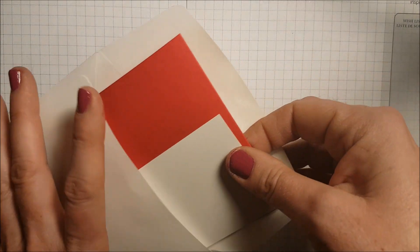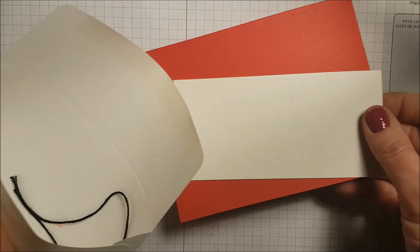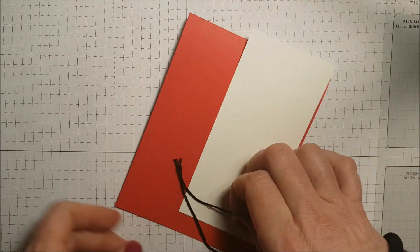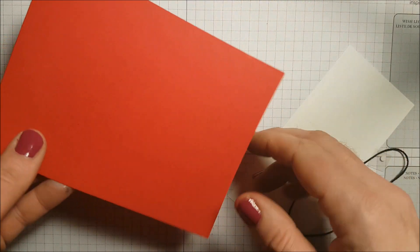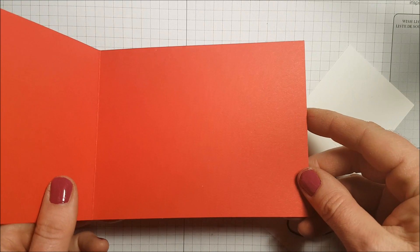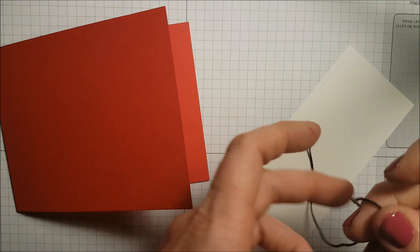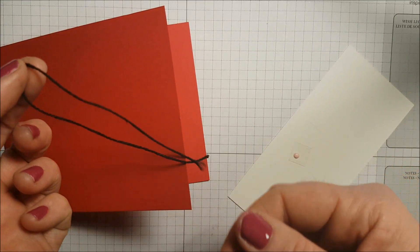Club members will receive an envelope with all their supplies to make this card. You have a piece of real red cardstock cut at 11 by 4 and a quarter, so when folded in half it measures five and a half by four and a quarter.